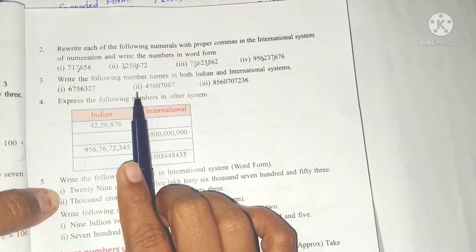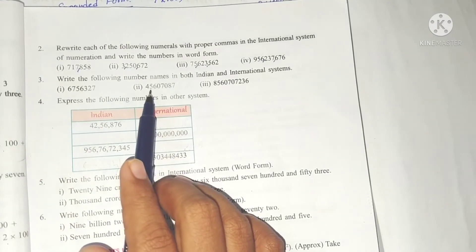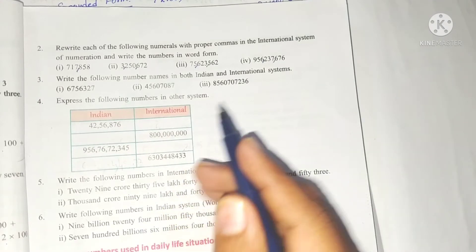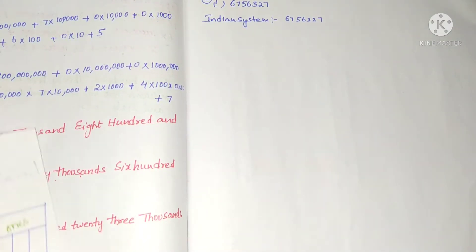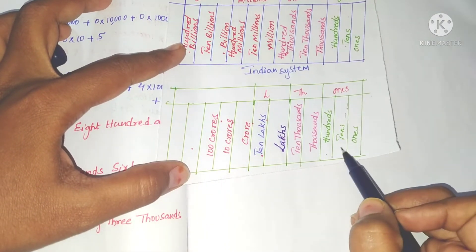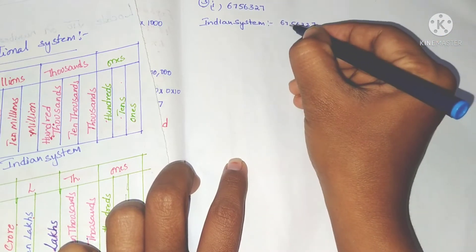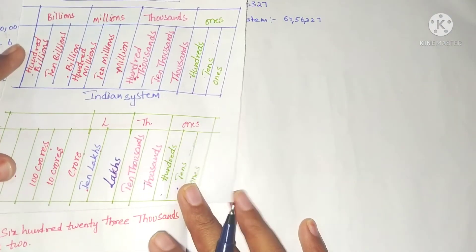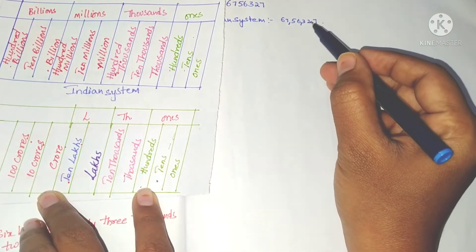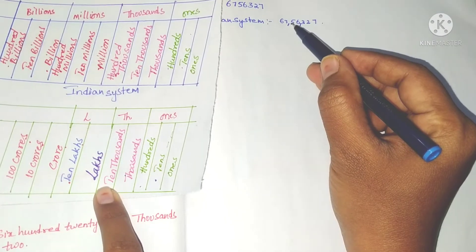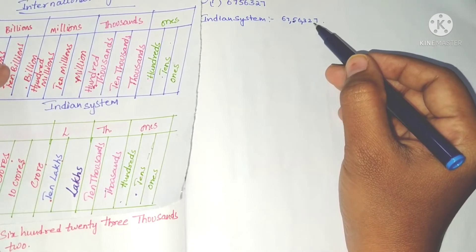Third problem: write the following number names in both Indian and international systems. In the Indian system, commas are placed first after three digits from the right, and then after every two digits. The place values are: ones, tens, hundred, thousand, ten thousand, lakhs, ten lakhs. So the first number is sixty-seven lakhs, fifty-six thousand, three hundred and twenty-seven.